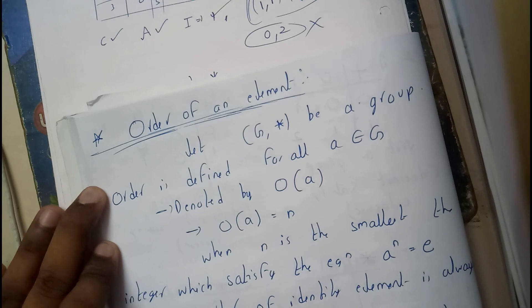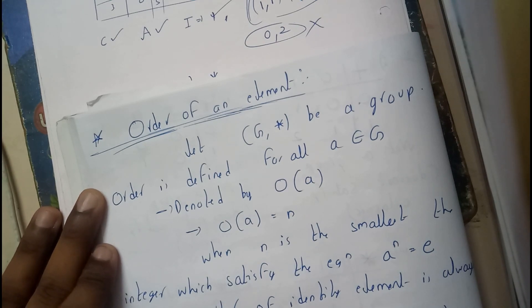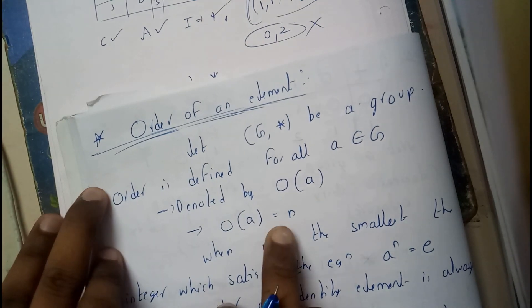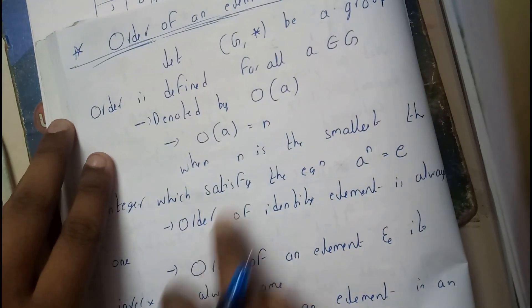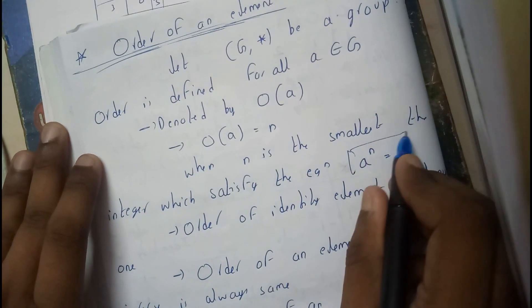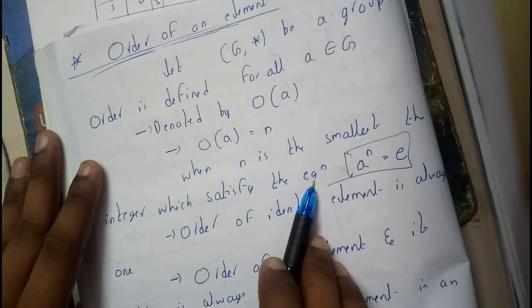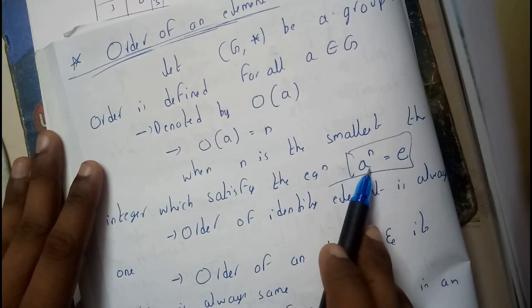Let G, star be a group. Order is defined for all a belonging to G and is denoted by O(a). O(a) equals n, where n is the smallest integer which satisfies the equation a^n equals 1, where 1 is the identity element.